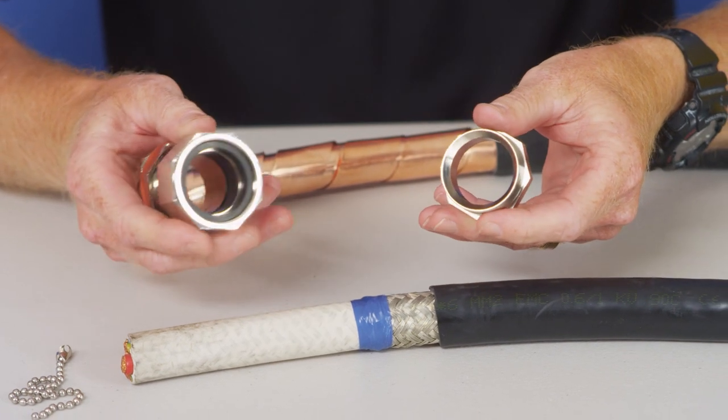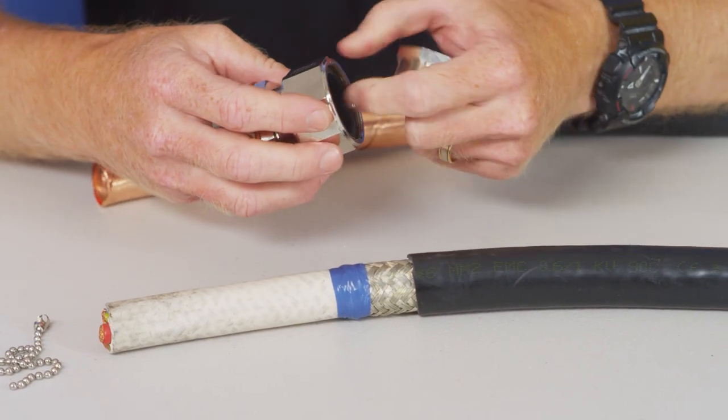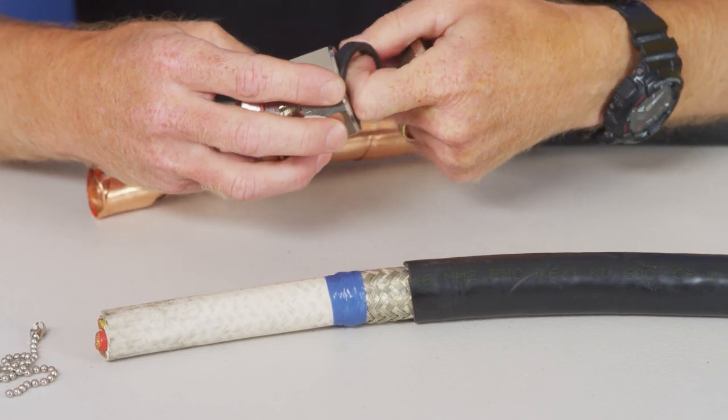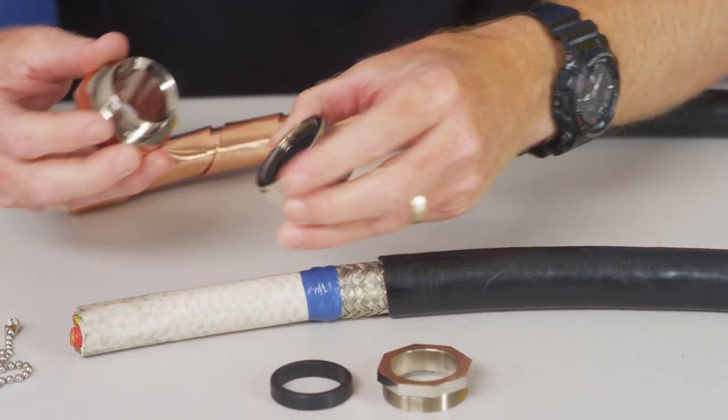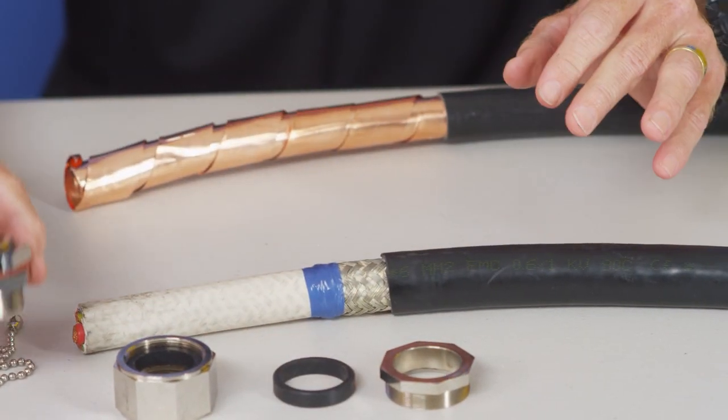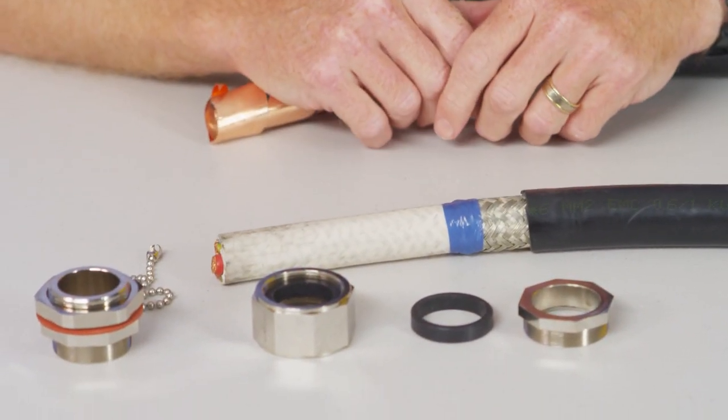And then we'll pull the gland apart. So as we did on the other EMC gland, we have the back seal that we pull apart. We have the body which is in the middle there and then we have the sleeve that goes on at the last point.